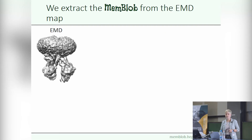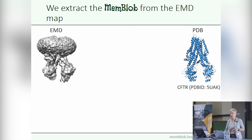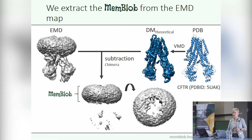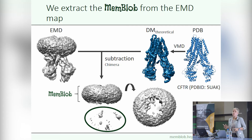Our inputs are an EMD map and the corresponding structural model of the protein. From the structure, we generate a theoretical density map of the protein, which we subtract from the EMD map. This way, we simplify our further calculations, as our map now contains only the densities of the blob, at least in an ideal case. Here you can see that there are some extra blobs — these are parts of the original EMD map which weren't used to create the model.